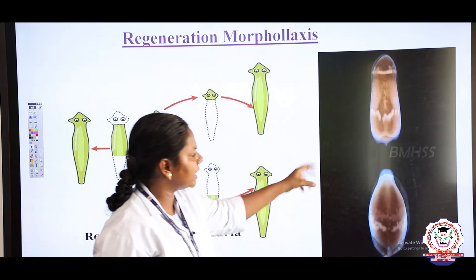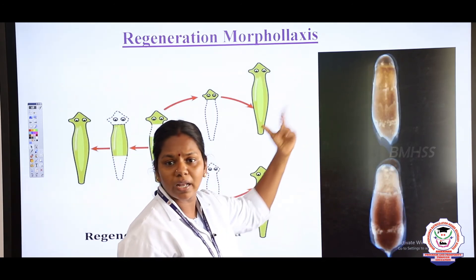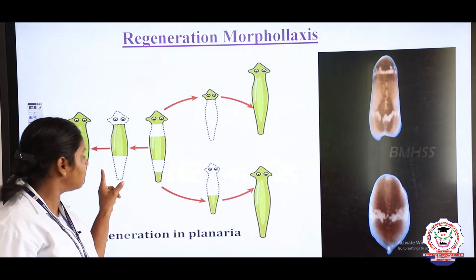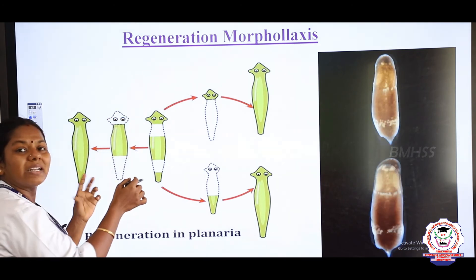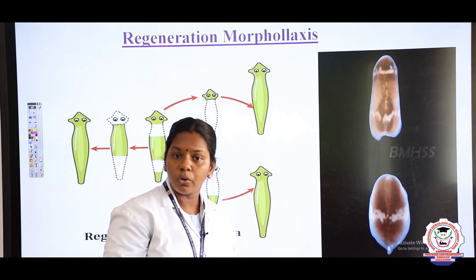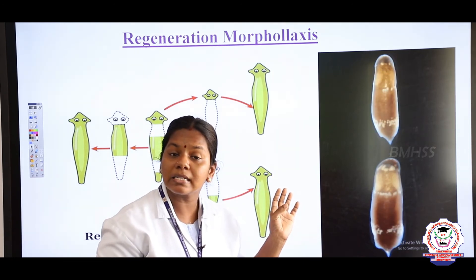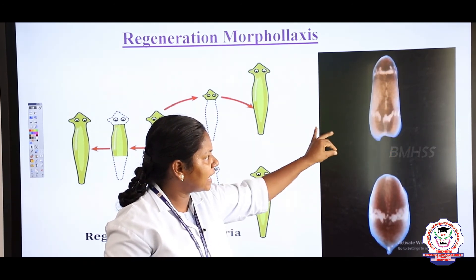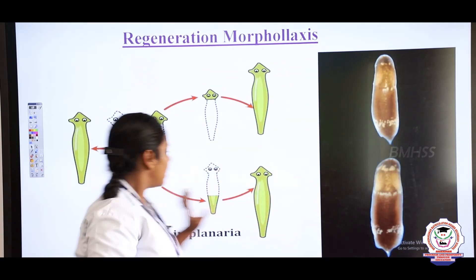Another example for morpholysis is planaria, which belongs to the phylum Platyhelminthes. When planaria is cut into three fragments — head, middle part, and tail — each fragment develops into an individual organism. So when an entire organism is formed from cut-off fragments, we call it morpholysis.